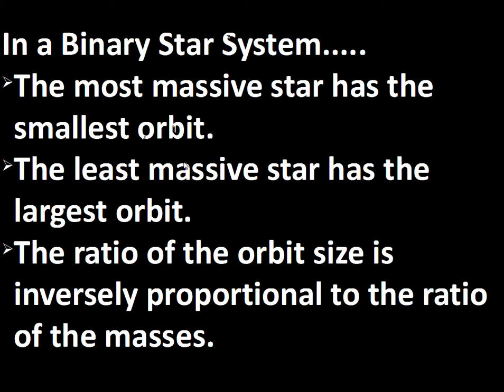We have binary star systems in our galaxy and other galaxies, and they are quite common. From this structure — two stars in orbit around each other — they have a gravitational effect that leads to motion, a certain size of orbit, and a certain speed in the orbit. And this can give us information about the masses of the stars.